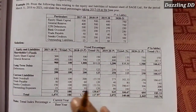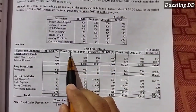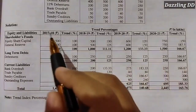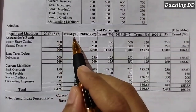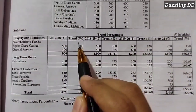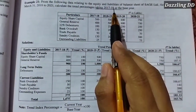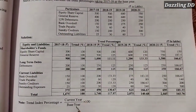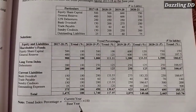This is the main part — we have to find the trend percentage. The formula: trend percentage equals current year value divided by base year value, into 100. The base year value always goes in the denominator. Since 1718 is the base year, all those values come in the denominator.